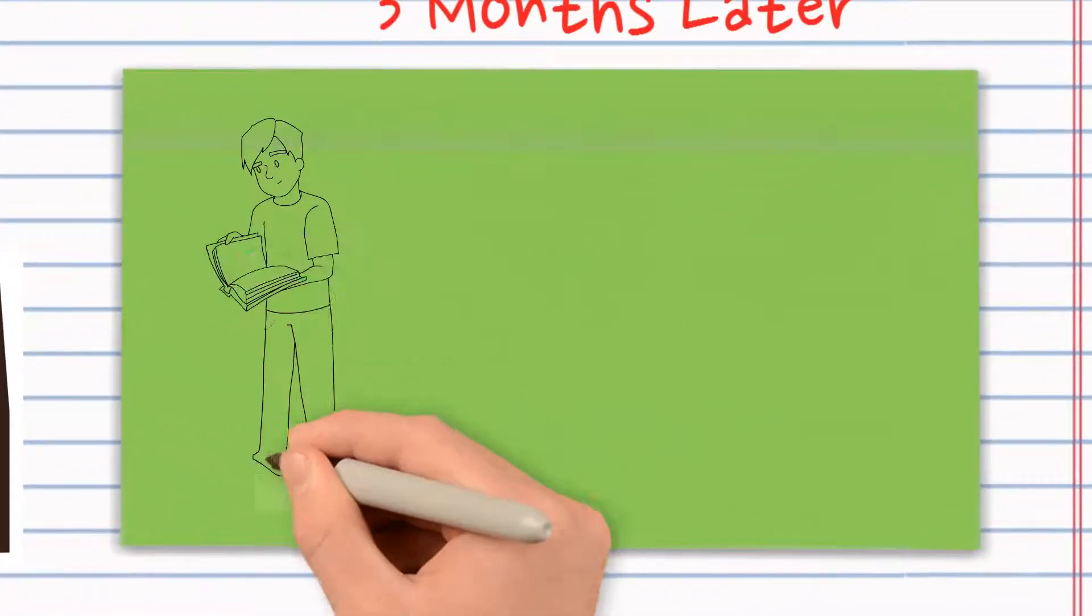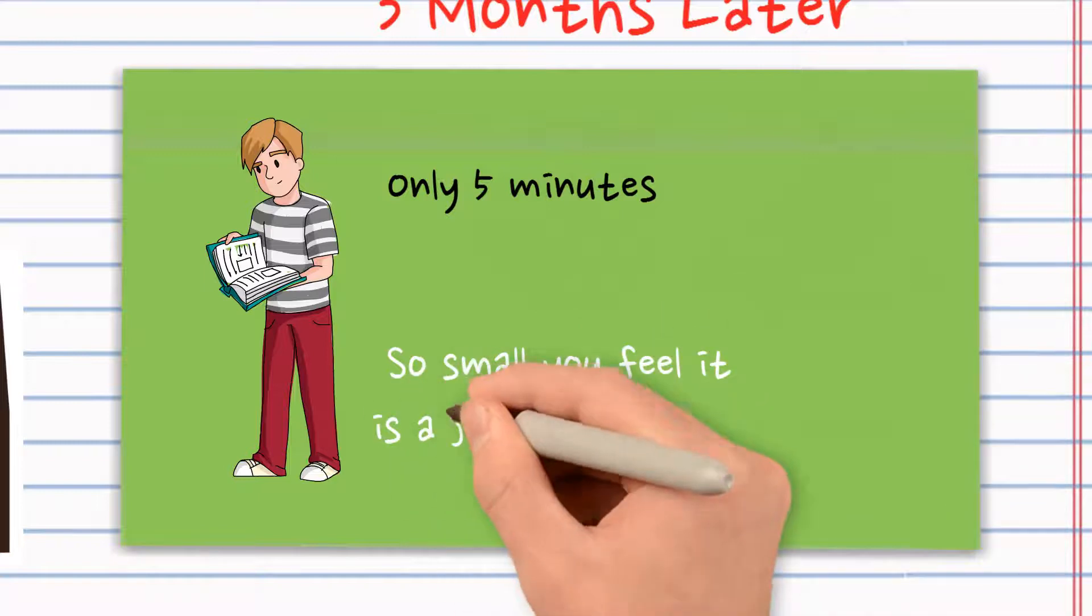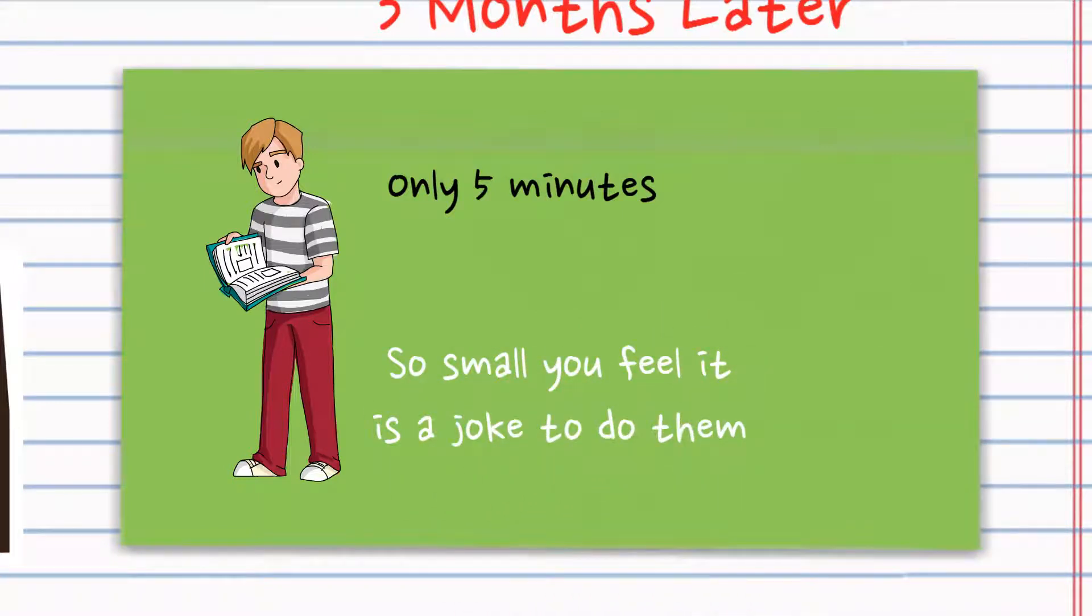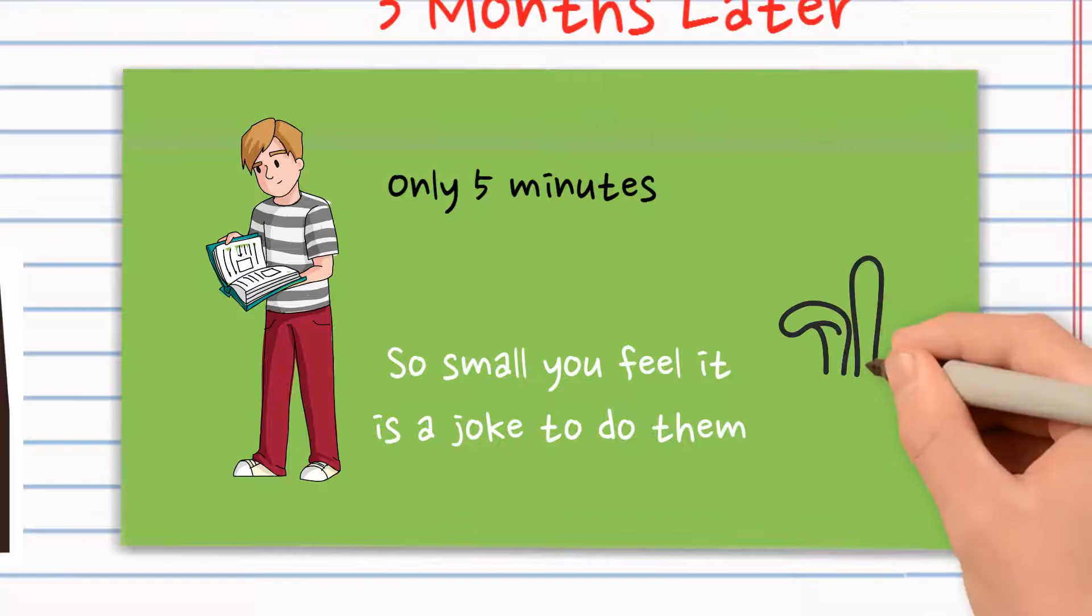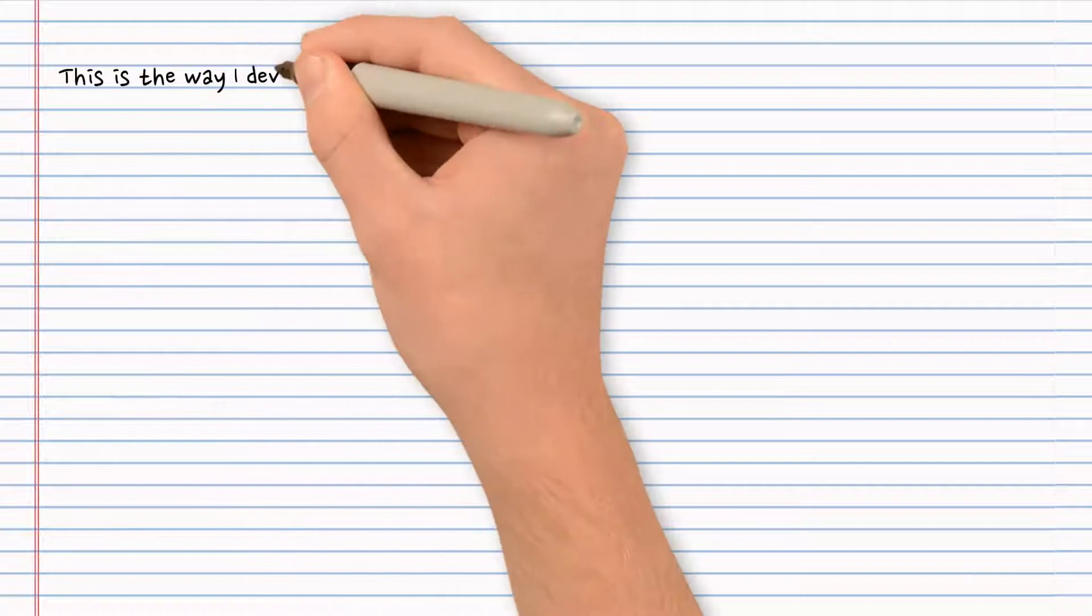If you want to build a habit of reading, you can start by reading for five minutes every day. The idea is that you tailor the habit you want to build to a size that you find so small that you know it's a joke to do, and that's where the magic happens.